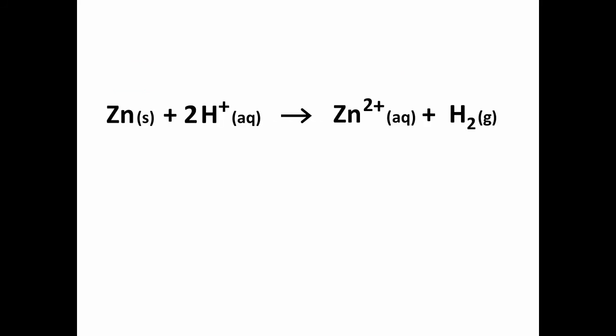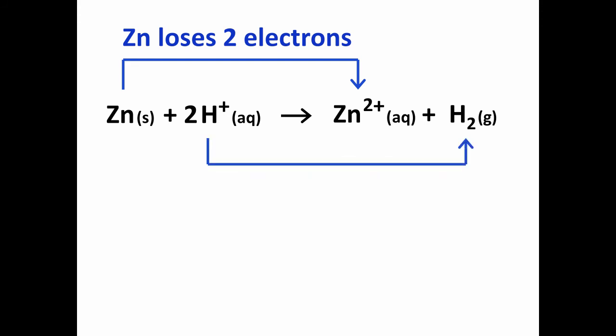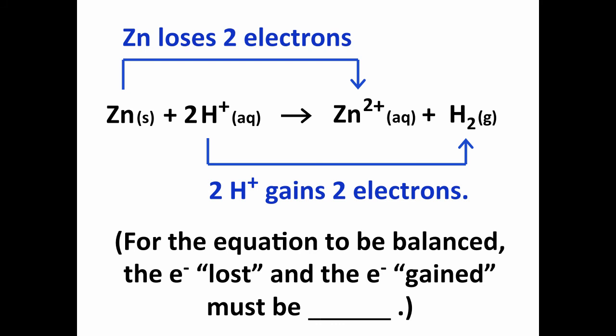Now, one other thing to note with this reaction is that the zinc loses two electrons to form the zinc 2 plus ion, and two hydrogen ions each gain one electron. Since there's two hydrogen ions, then there's a total of two electrons gained to form the hydrogen gas, H2. This is always going to be the case in an oxidation reduction process. The number of electrons lost and the number of electrons gained have to be equal. We can't have electrons disappearing or appearing out of thin air. Electrons are actually being transferred. That's why the lost and gained are in quotes, because really the zinc didn't lose electrons. It simply transferred the electrons to the hydrogen ion, and that's how the hydrogen ion gained electrons.